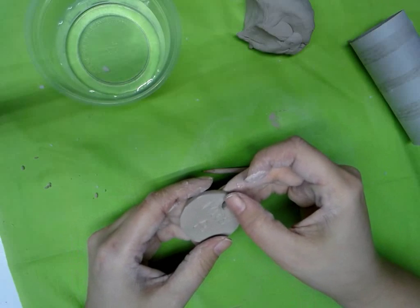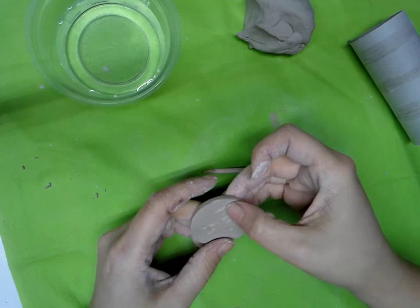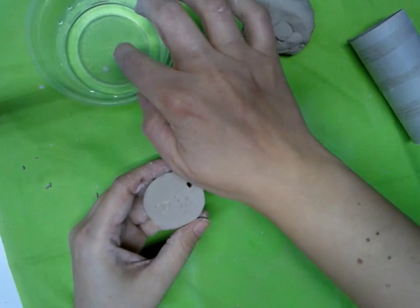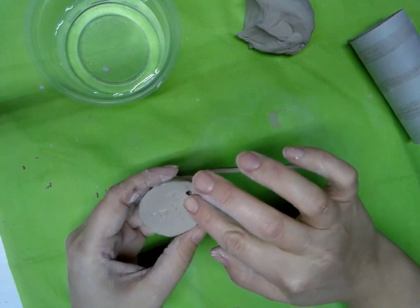So we're going to smooth that down with our finger. Get that all squished down. I'm going to use just a tiny bit of water if I want to smooth it down.